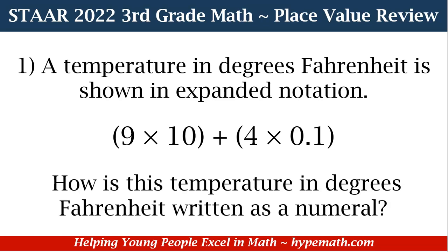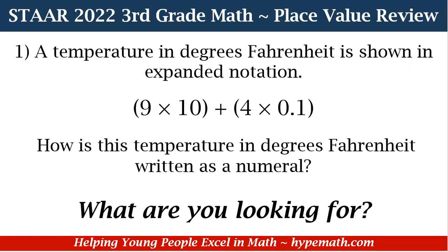Our first problem says: a temperature in degrees Fahrenheit is shown in expanded notation. Notation is the same as saying expanded form, which we just went over. The expanded notation is: 9 × 10 plus 4 × one tenth. The question asks: how is this temperature in degrees Fahrenheit written as a numeral? Numeral is just a fancy way of saying number. The first and most important step is: what are we looking for?